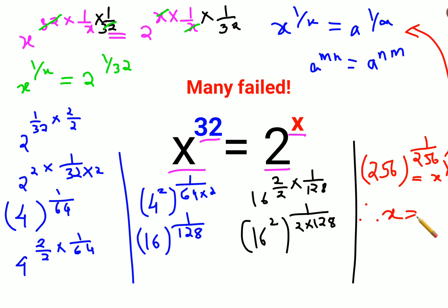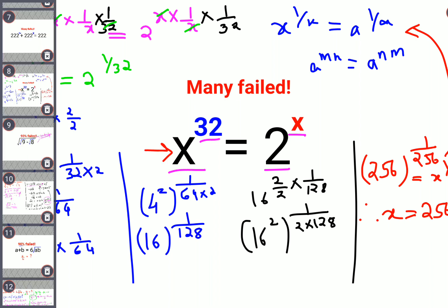I hope this is very clear to everyone. Now let's put this value back. The question was x raised to 32 equals 2 raised to x, and from here we got the value of x as 256.